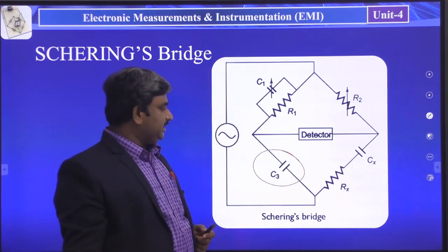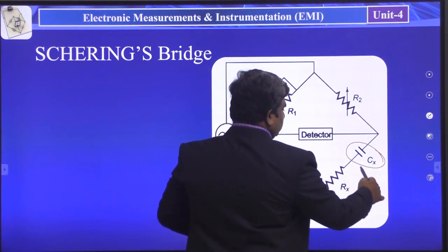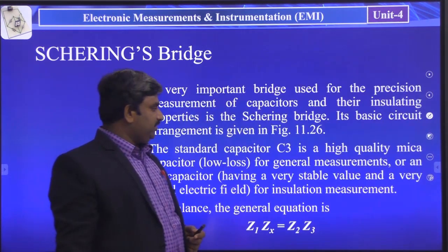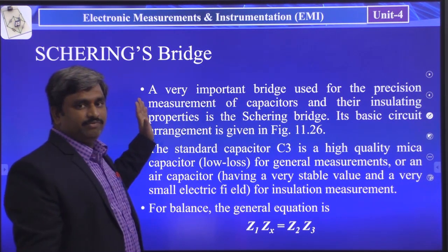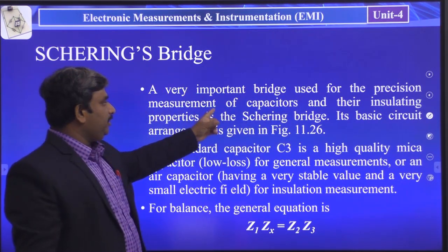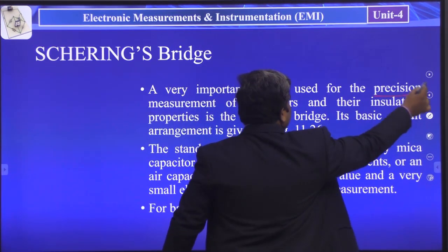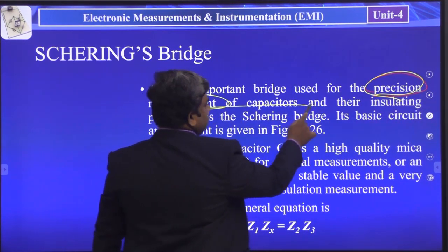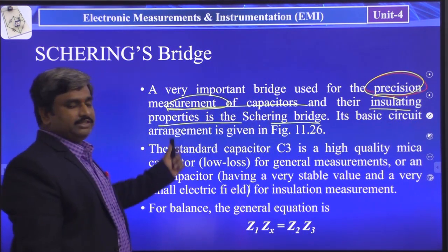These are the two modifications from Maxwell's Bridge. Before going to the derivation, first we will see the circuit's key description. The Schering Bridge is a very important bridge used for the precision measurement of capacitance and insulating properties. Precision measurement of capacitances and insulating properties — that is the major objective.